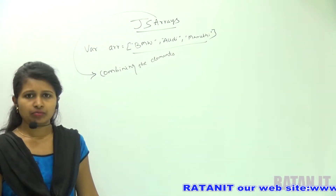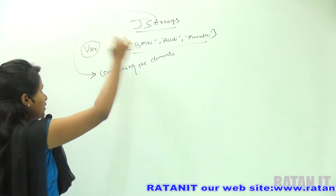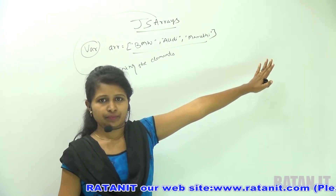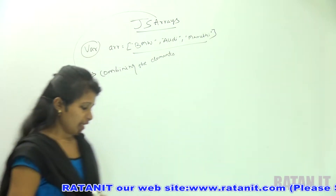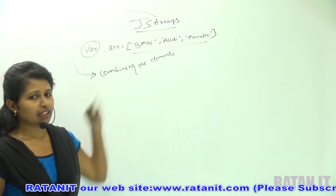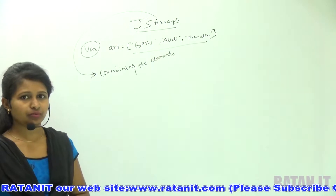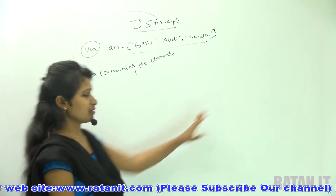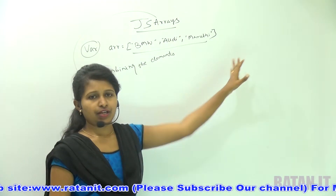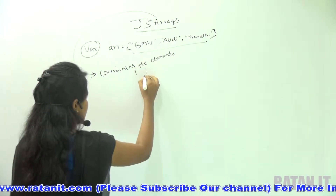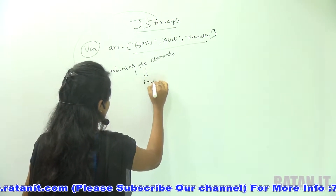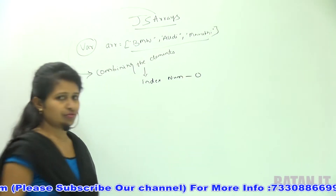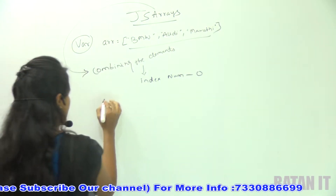Here, I am going to combine using a single variable type and I am going to store all these things with the index number. This is the way of declaring. How to access these elements? Elements will be accessed with an index number. Index starts with 0.